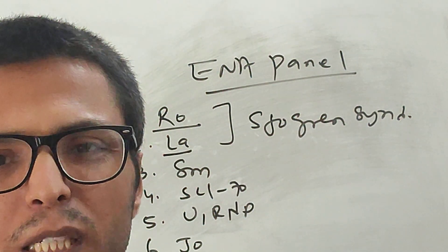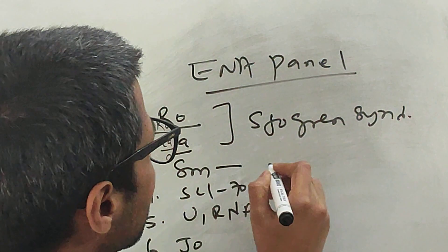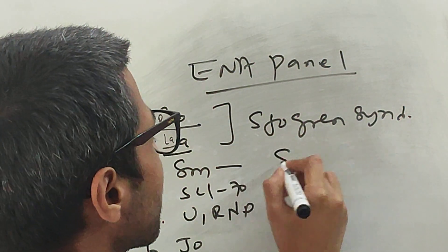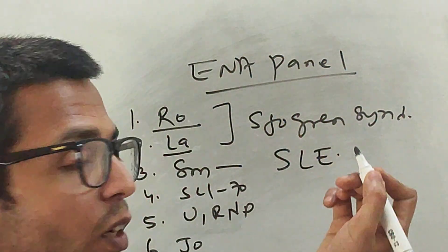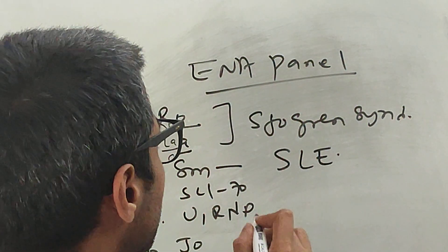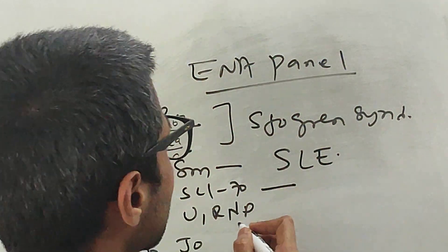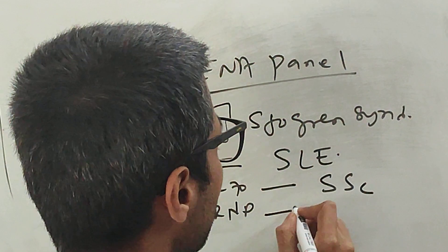If you see anti-Smith antibody, it is highly specific for SLE if present in high titer, but can be seen in other diseases like rheumatoid arthritis, mixed connective tissue disease. Similarly, if you get Scl-70, it points more towards systemic sclerosis. U1RNP points more towards mixed connective tissue disease but can also be present in SLE and rheumatoid arthritis.